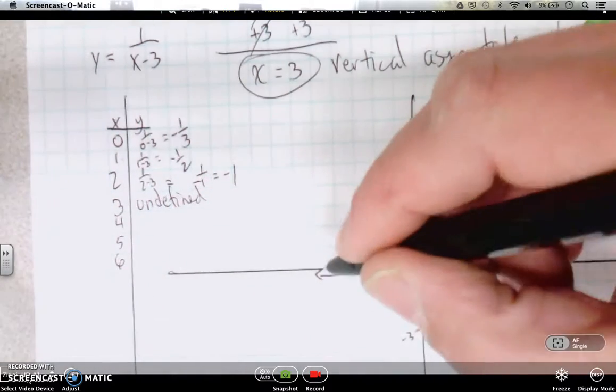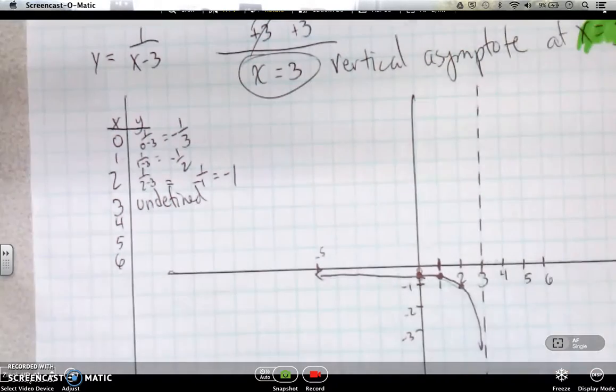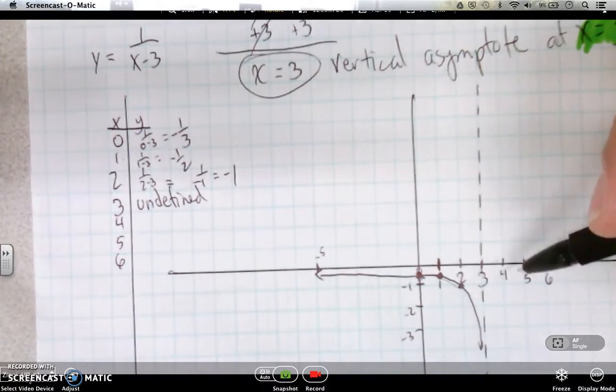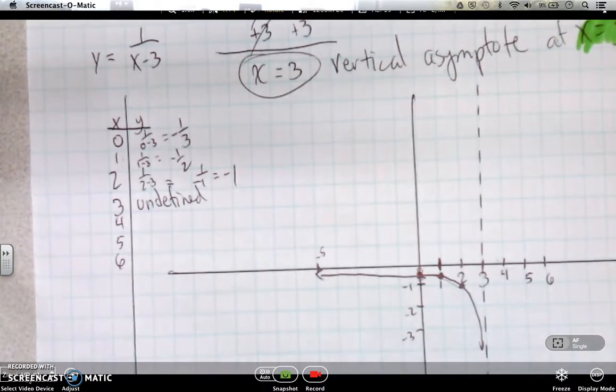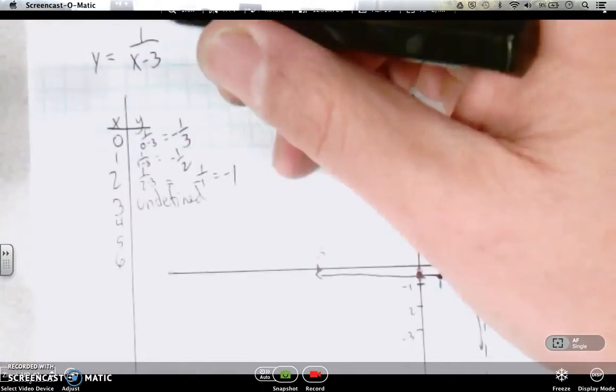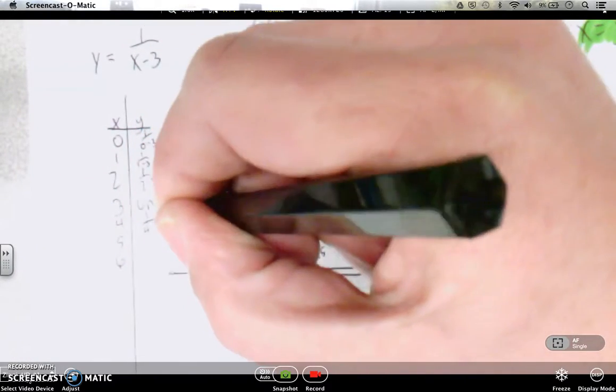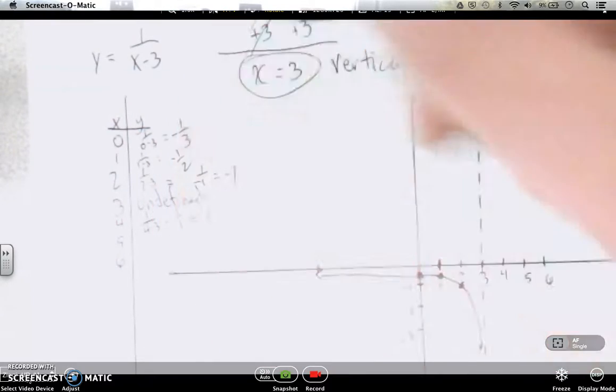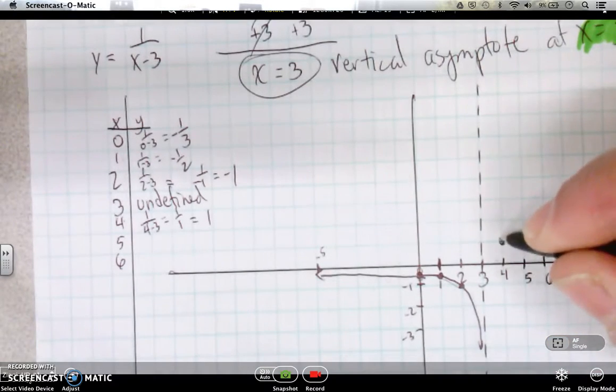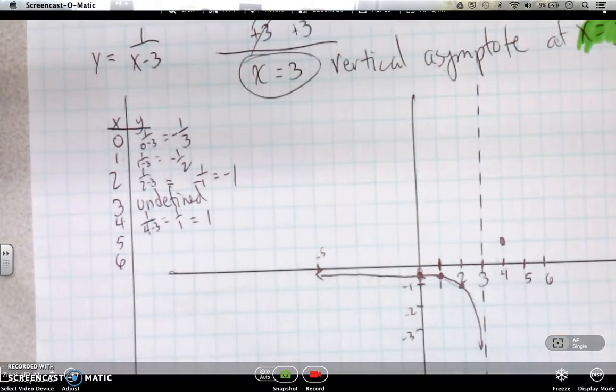And you can verify that by trying numbers like negative 5 and stuff like that. And you'll verify what points that is. Let's go ahead and try on this side. We sort of know what's going to go on, but let's do the table values just to verify it. If you plug in 4, you get 1 over 4 minus 3, which gives you 1 over 1, which is 1. So 4 and 1. There it is.